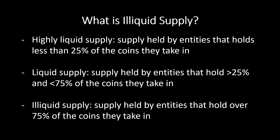To understand supply liquidity, we need to understand the three different cohorts. First, highly liquid supply — defined as supply held by entities that hold less than 25% of the coins they take in. So for every four coins they take in, they spend more than three. These entities are most likely market makers or traders in and out of the market all day. Second, liquid supply — defined as entities that hold over 25% but less than 75% of the coins they take in — probably your intermediate-term traders.